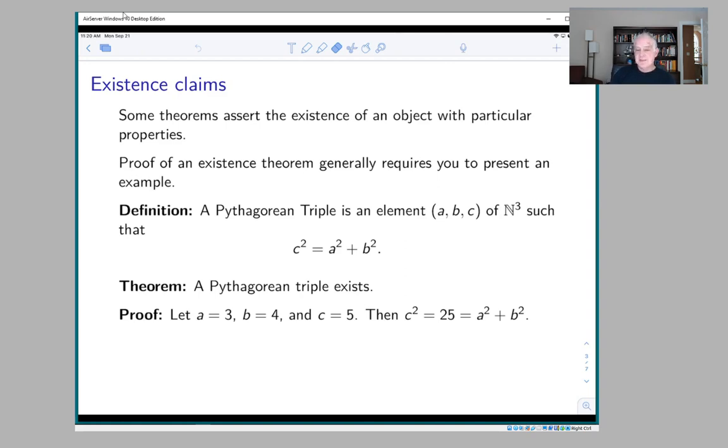Proof: Suppose a = 3, b = 4, and c = 5. Then c² is 25, and that's 9 + 16, which is a² + b². So a Pythagorean triple exists.